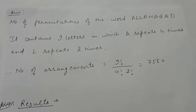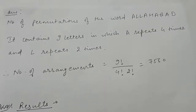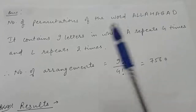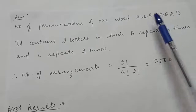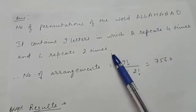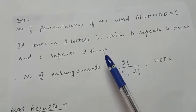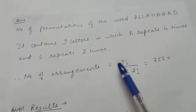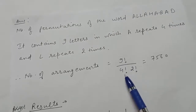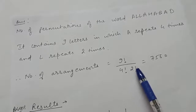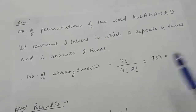Now find the number of permutations of the word ALLAHABAD. This word contains 9 letters, where A repeats 4 times and L repeats 2 times. Since objects are not distinct, the number of arrangements is 9! / (4! × 2!).